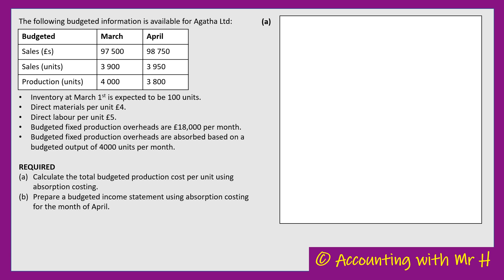Here is the question for this video. The following budgeted information is available for Agatha Limited. In the table I've been given the budgeted sales in pounds, the budgeted sales in units, and the budgeted production in units for March and April. Other information: the inventory on March the 1st is expected to be 100 units. Direct materials per unit: £4. Direct labour per unit: £5. The budgeted fixed production overheads are £18,000 per month, absorbed based on a budgeted output of 4,000 units per month.